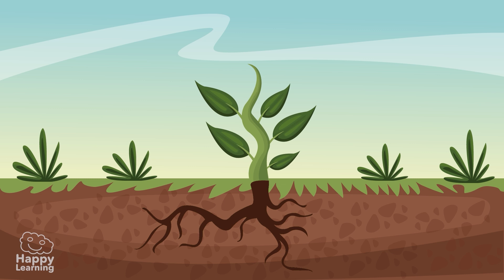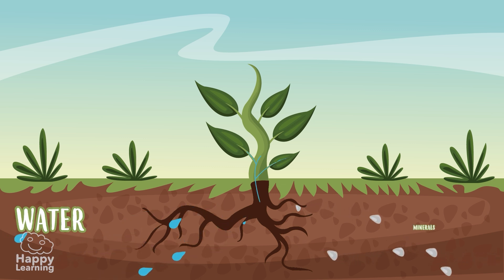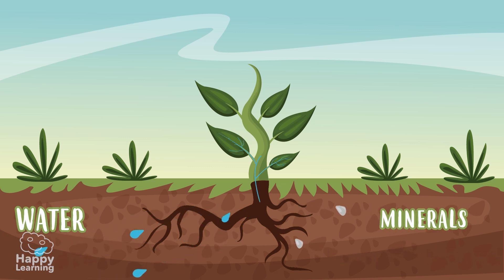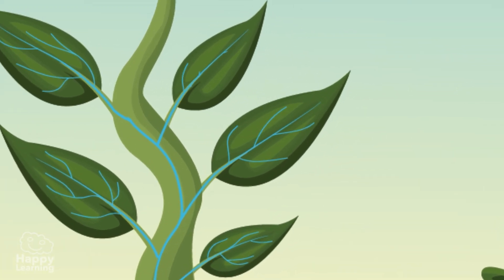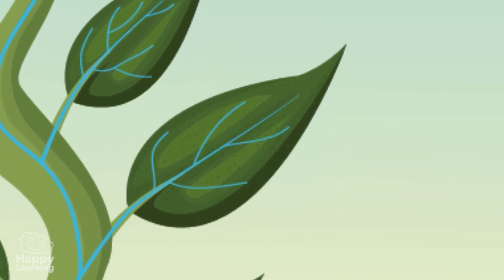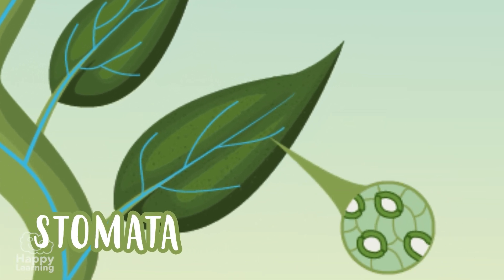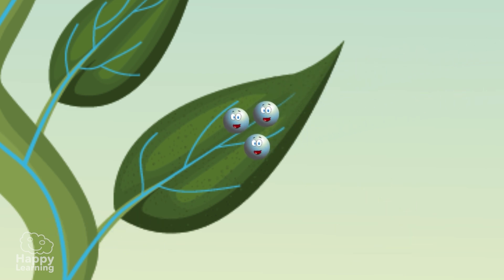But how does photosynthesis take place? Look at this plant. As you can see, its roots are anchored to the ground, and through them the plant absorbs water and minerals in the soil. Water with minerals are transported up the stem, reaching the leaves. The leaves are full of tiny pores called stomata, which absorb carbon dioxide that the surrounding air contains.